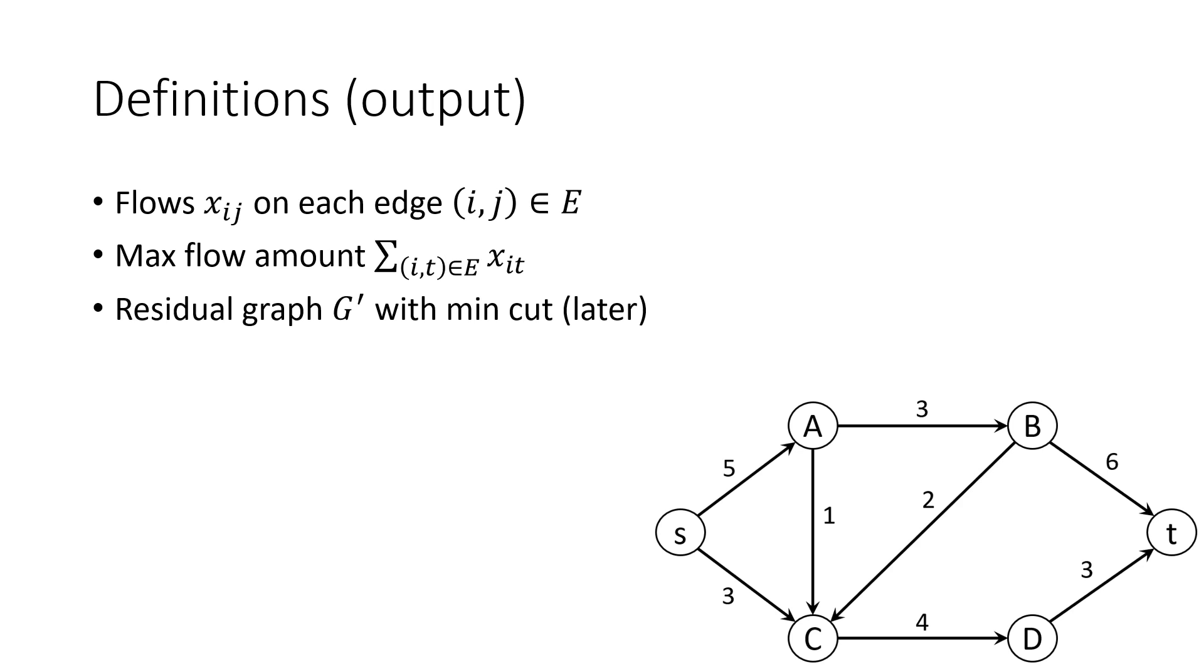Now we define the output of the problem more formally. What we should get after running our algorithm is a set of flows x_ij on each edge from node i to node j, and we should also be given our max flow amount. The mathematical notation may be a little hard to parse at first. But basically, we're saying that the max flow is going to be the sum of all the flows into T. This should make intuitive sense. T is the sink node, so all the flow through the graph is going to have to go through to T.